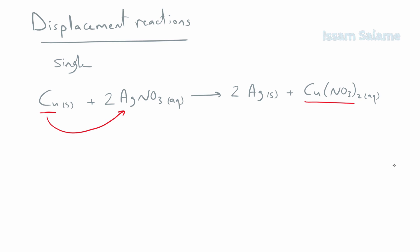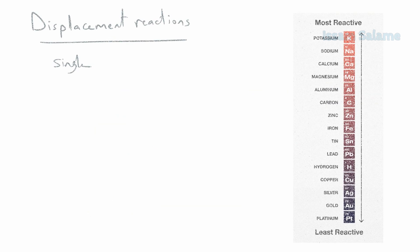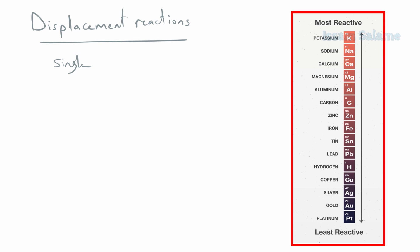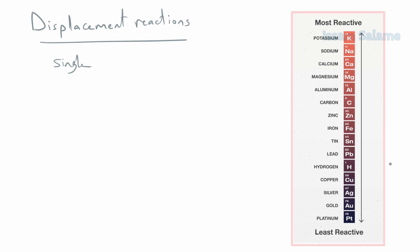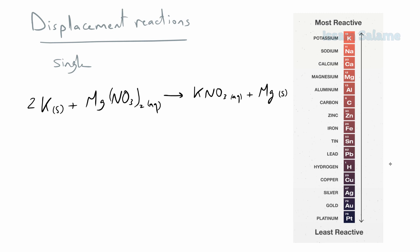Copper displaced silver. Now, if we add silver to copper nitrate, there will be no reaction. This is because of something called the activity series. The activity series arranges elements according to their reactivity from least reactive to most reactive. In this series, potassium is the most reactive and platinum is the least reactive. So if we add potassium solid to magnesium nitrate, since potassium is higher in the activity series than magnesium, potassium would easily displace magnesium and form potassium nitrate and magnesium solid. We balance by multiplying potassium and potassium nitrate by two.